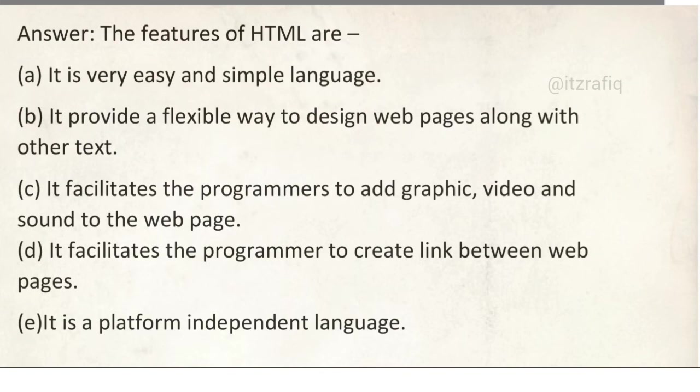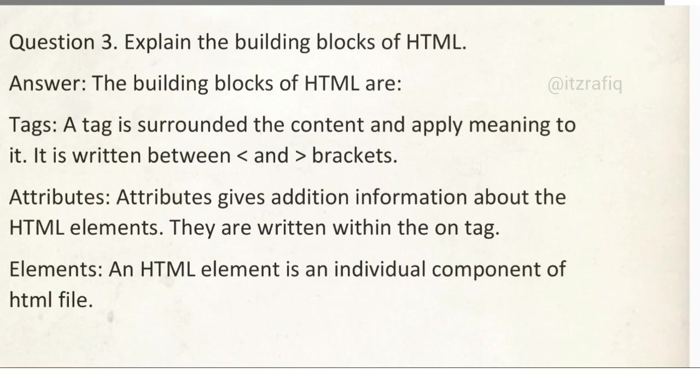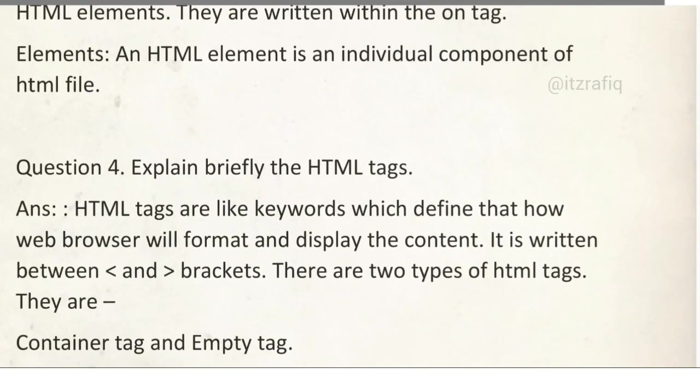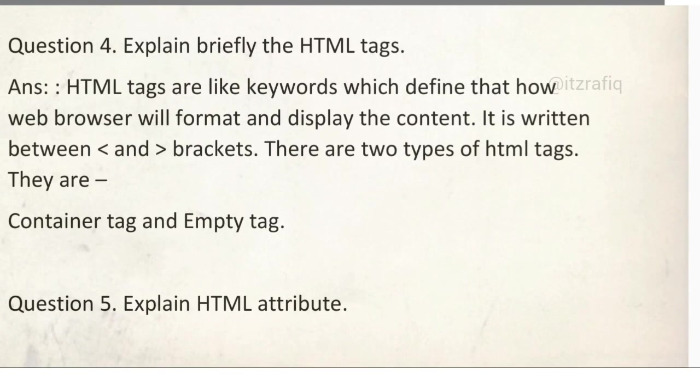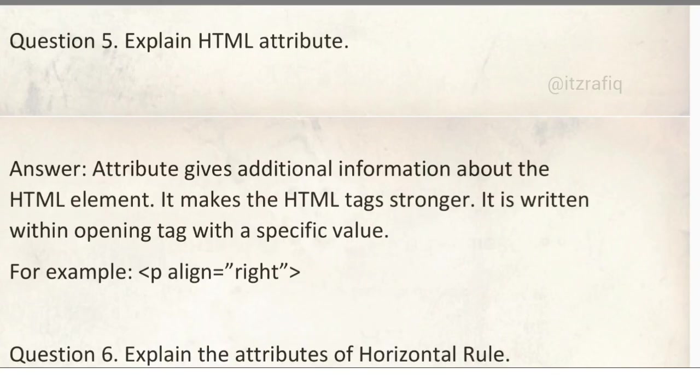Explain the building blocks of HTML. The building blocks of HTML are tag, attributes, and elements. All three definitions you will write and even you can give examples. For tags you can give B, body, any tag. Attribute, attribute one example I have already given. And elements like B opening, something you write, and B close. But for 3 marks this part is okay. If there is 5 or 4 marks you can give the examples also. Number 4: Explain briefly the HTML tags. It's already said. Still you can see it from here. Number 5: Explain HTML attribute. We have already discussed this also.